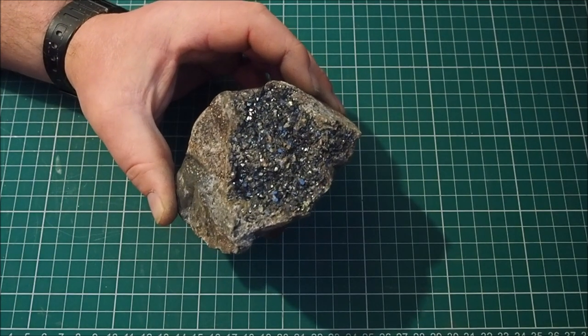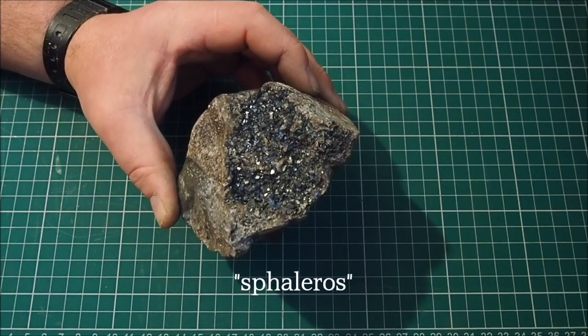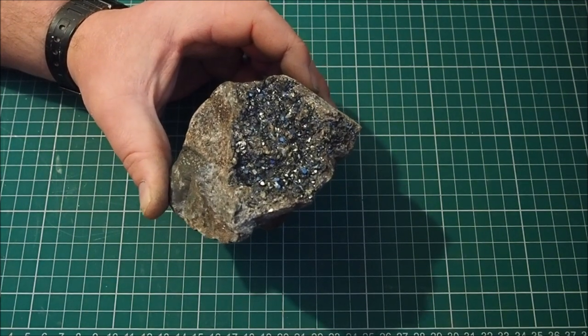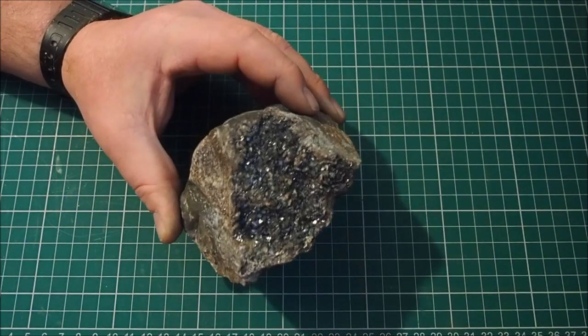The name Sphalerite is from a Greek word, Sphalaros, which means deceiving or treacherous. This name is in response to the many different appearances of Sphalerite and because it can be really challenging to identify.